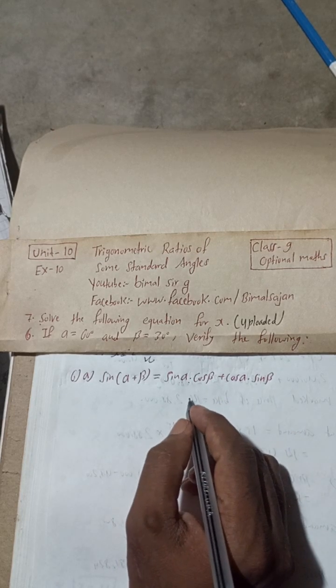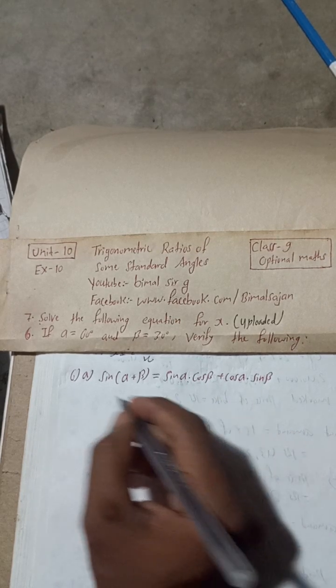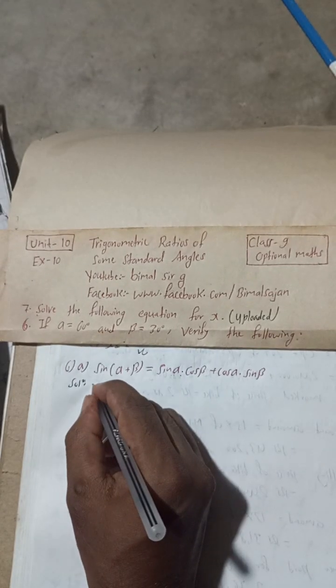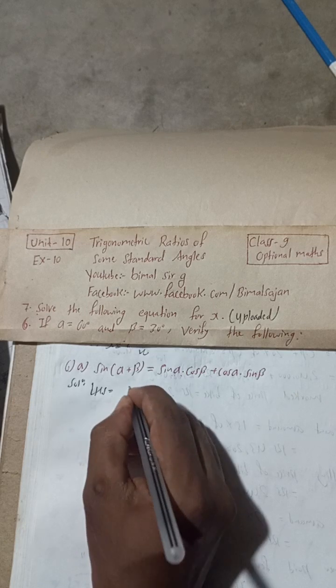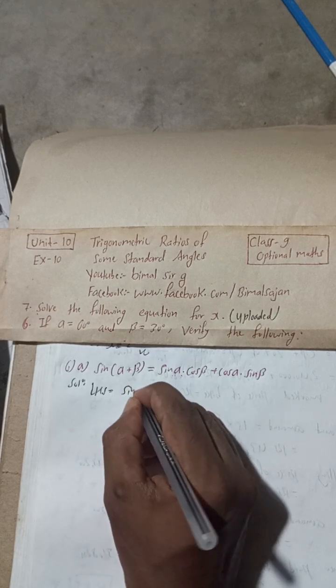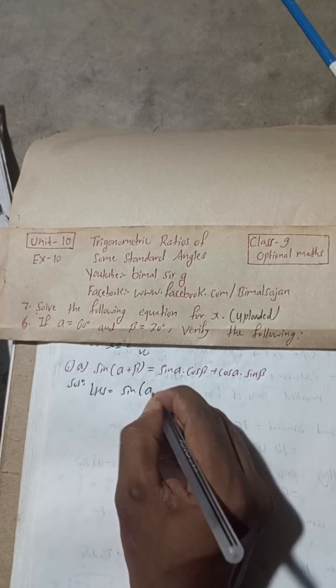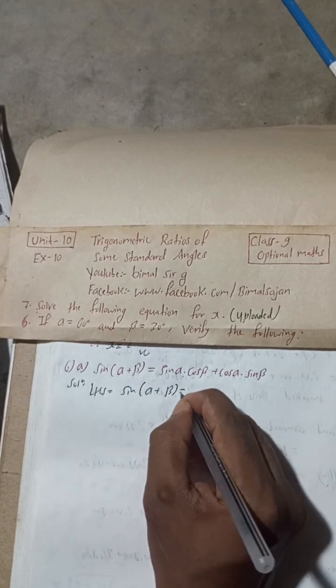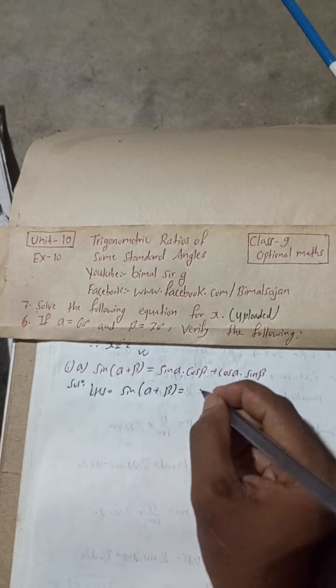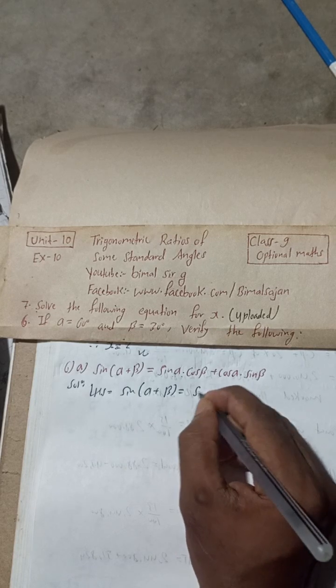So to verify this, we will take the LHS part. LHS is equal to sin(alpha + beta).